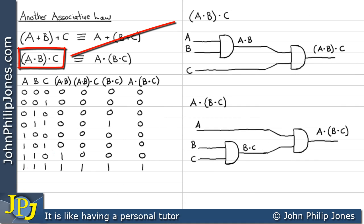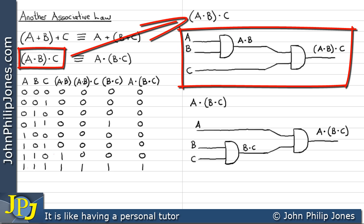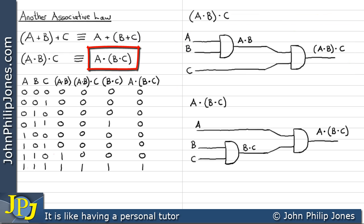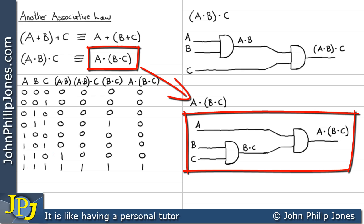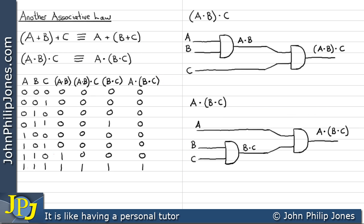The equivalence is also shown using combinational logic circuits. For the condition where A, B, and C are all set to zero: in the first circuit, both inputs to the first AND gate are zero, so its output is zero. That zero and the C input of zero feed the second AND gate, giving a zero output.